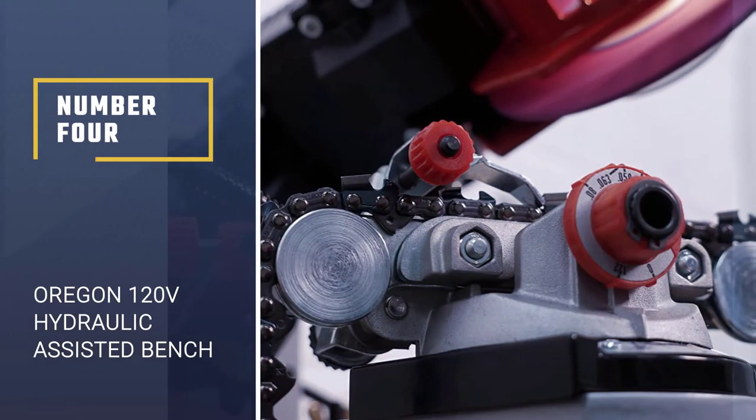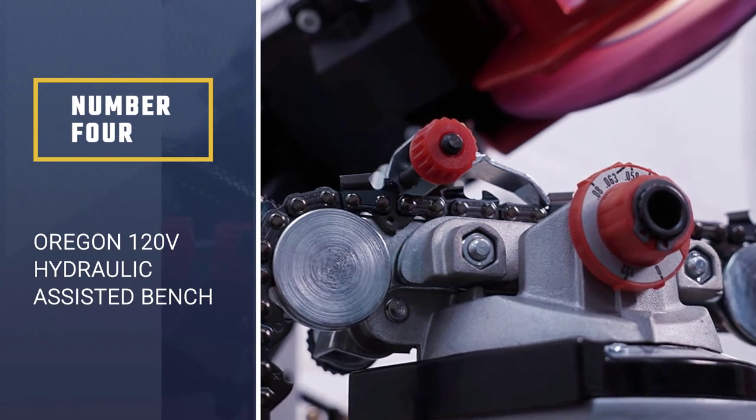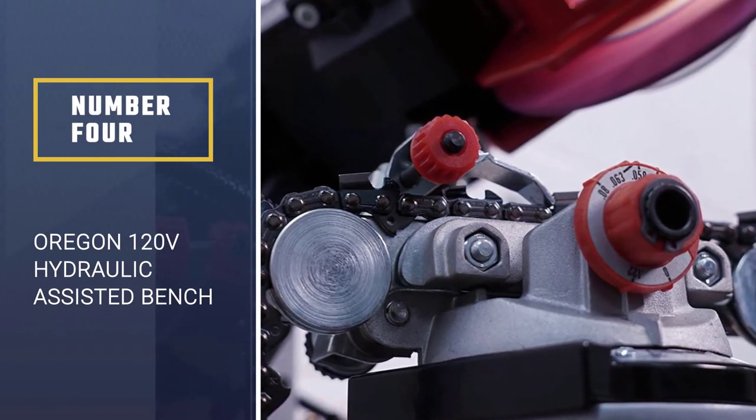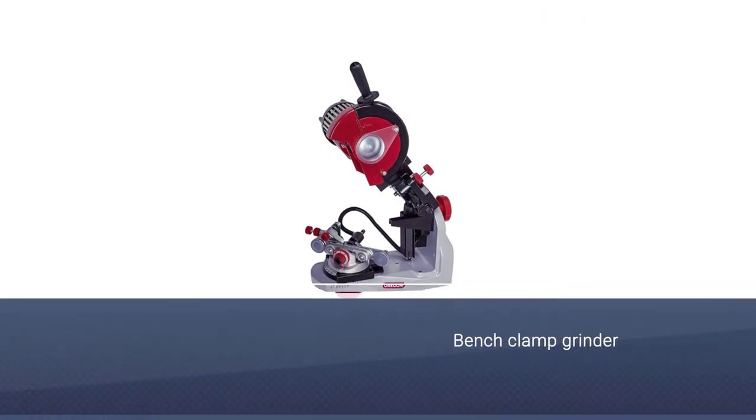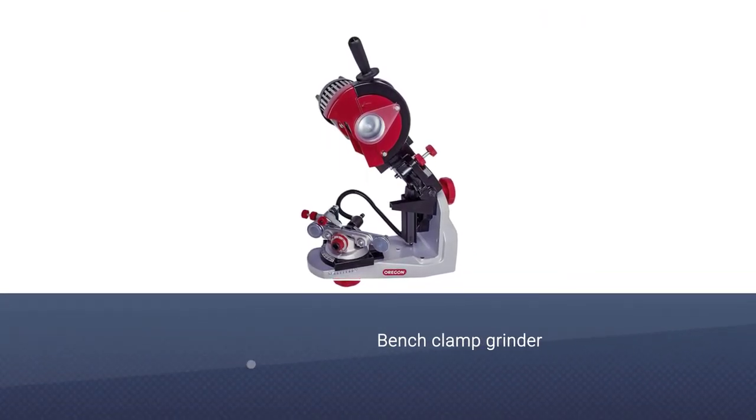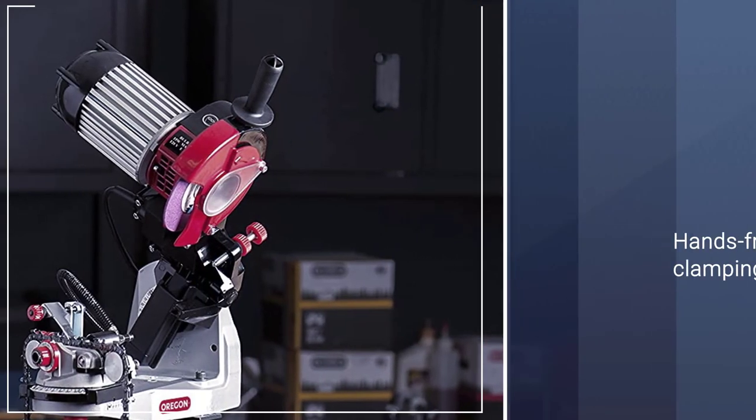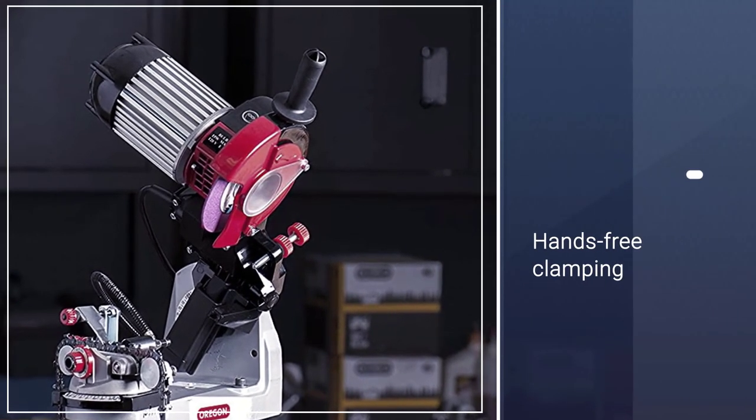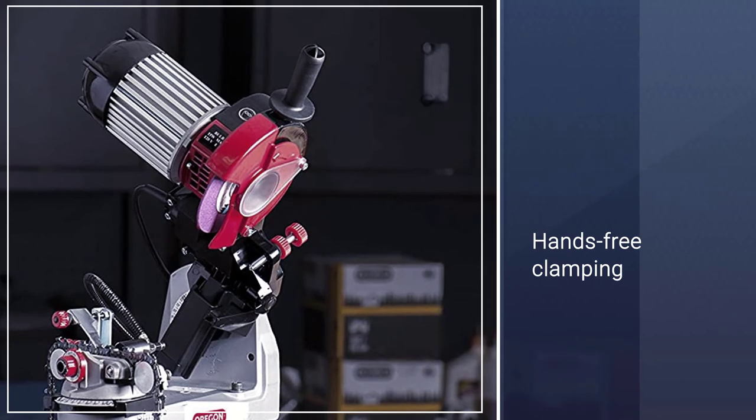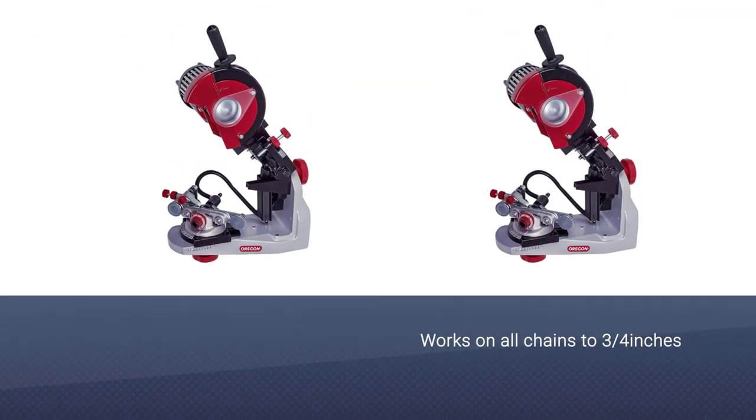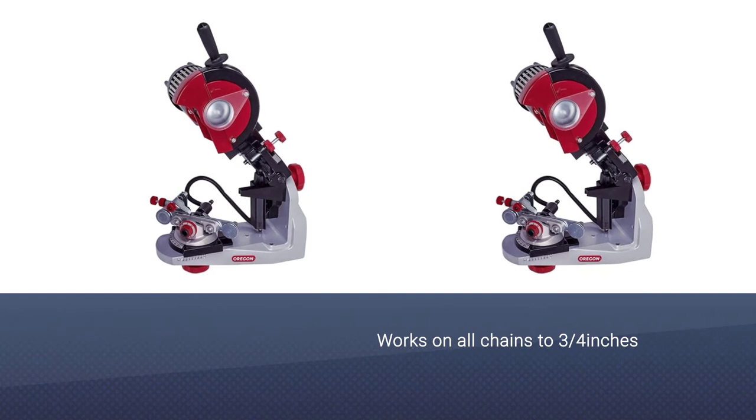Number 4. Oregon 120V Hydraulic Assisted Bench Grinder. Our premium pick for the best electric chainsaw sharpener is the Oregon 120V Hydraulic Assisted Bench Grinder. The 620,120 Hydraulic Bench Grinder clamps directly onto your bench using hydraulic assist power, so no manpower is needed at all.